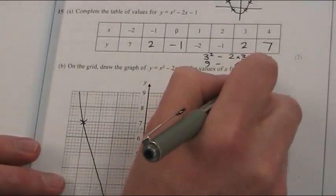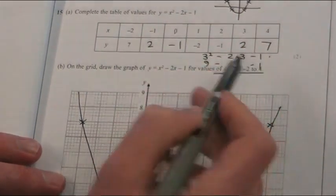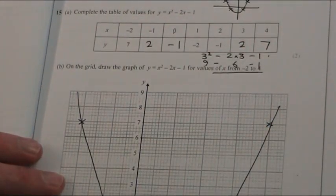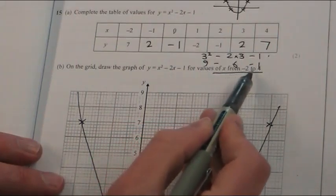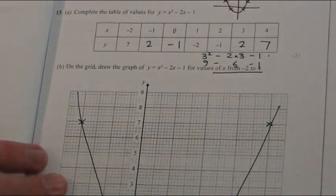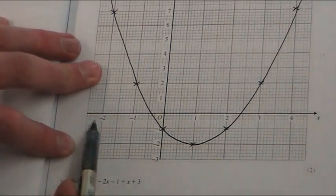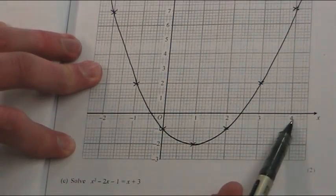15b - this last phrase here, and I know I've drawn over it slightly, really confuses people. For no reason, for the values of x from minus 2 to 4, that simply means on your graph it should go from minus 2 to 4. That's it.